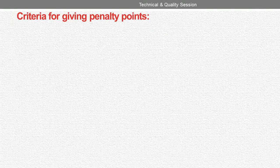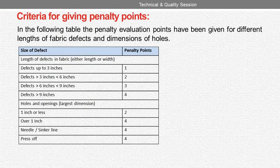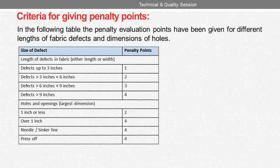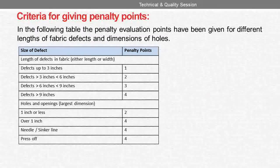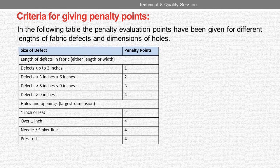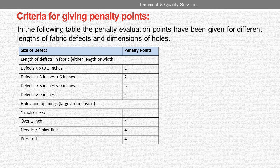Criteria for giving penalty points. In the following table, penalty valuation points are given for different lengths of fabric defects and dimensions of holes. Defects up to 3 inches: 1 point. Defects more than 3 inches and less than 6 inches: 2 points. Defects more than 6 inches and less than 9 inches: 3 points. Defects more than 9 inches: 4 points.